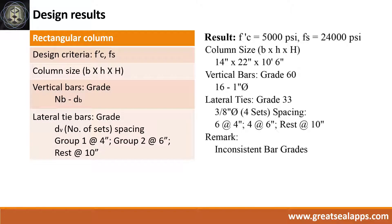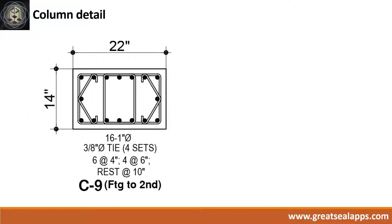Design results are as follows. FC' equals 5,000 psi, Fs equals 24,000 psi. Column size: 14 inches by 22 inches by 10 feet 6 inches. Vertical bars of grade 60: 16 pieces of 1-inch diameter bar. Lateral ties of grade 33: 3/8-inch diameter bar, 4 sets spacing — 6 at 4 inches, 4 at 6 inches, rest at 10 inches. Thank you for watching.